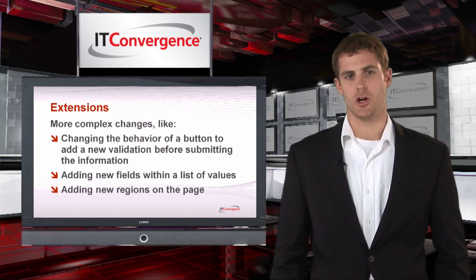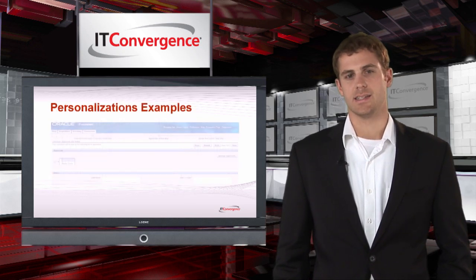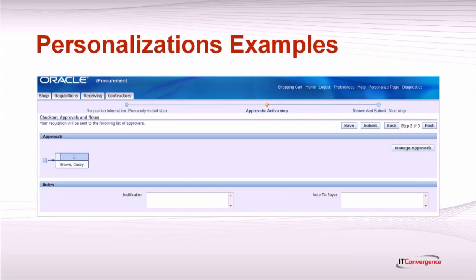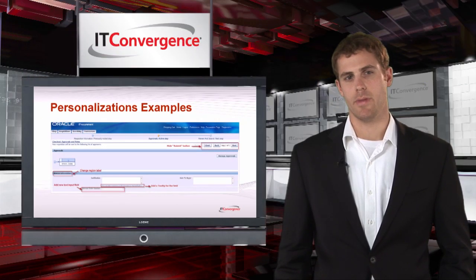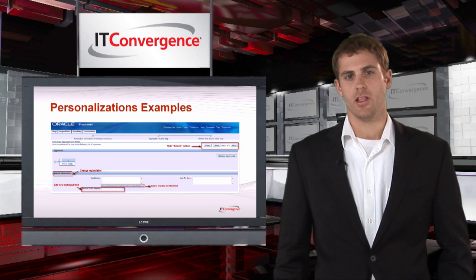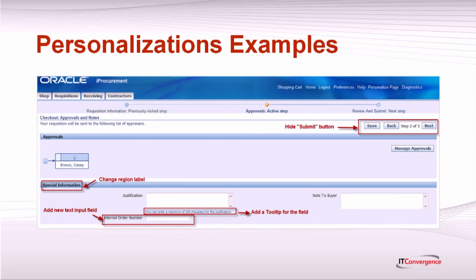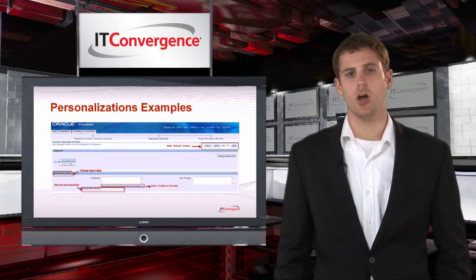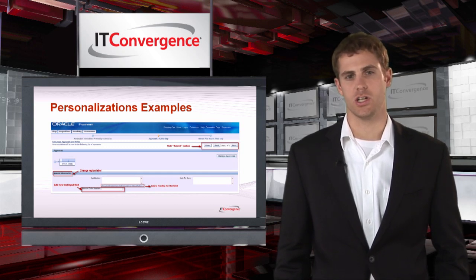In most cases, a combination of the two will be necessary to completely meet the business requirement. As an example, we made a couple of modifications to the checkout page from the requisition approval process in the iProcurement module. The submit button in the standard page was removed. The label on the note region has changed and we now have more generic text like 'special information,' which allows us to add new items and not only notes. For example, the new input text field that was added now reads 'internal order number.' Also, the justification field now has a tool tip to help the user know they can't enter more than a maximum number of characters for the justification text.